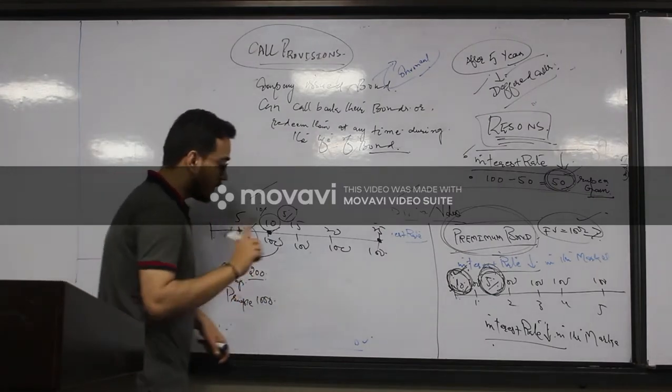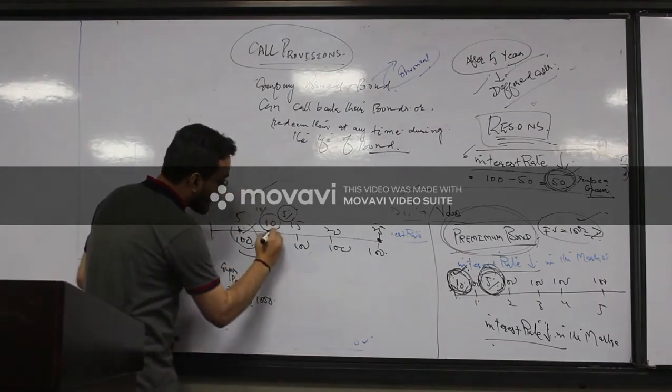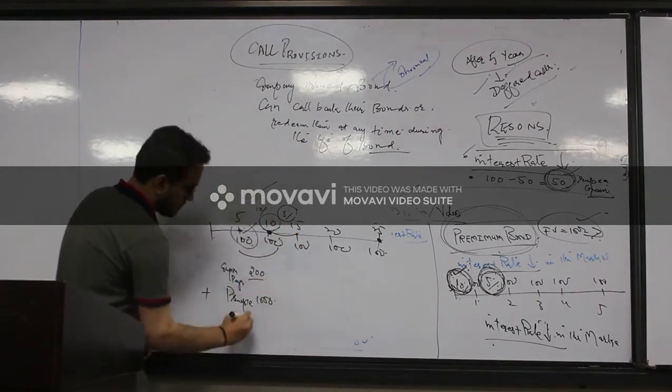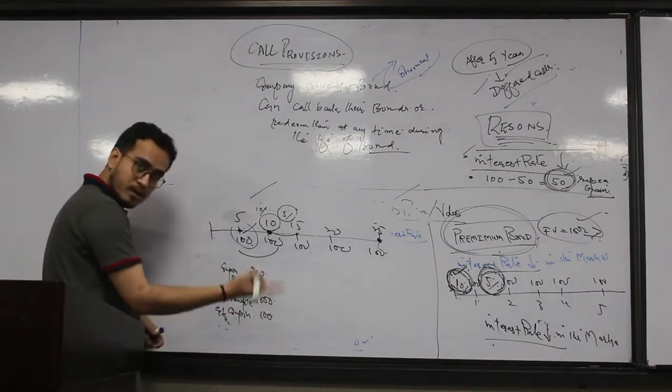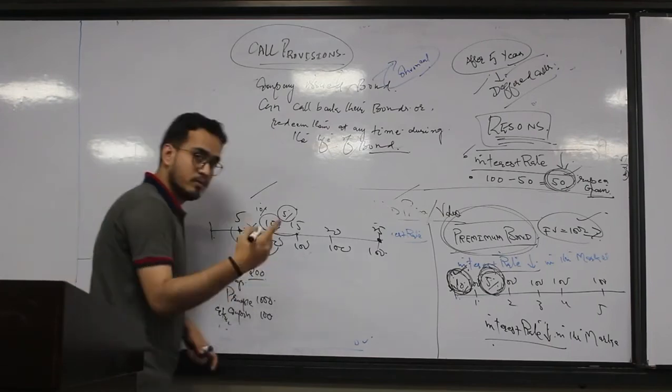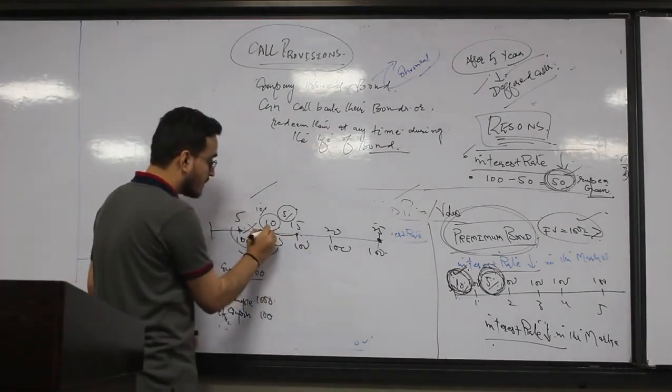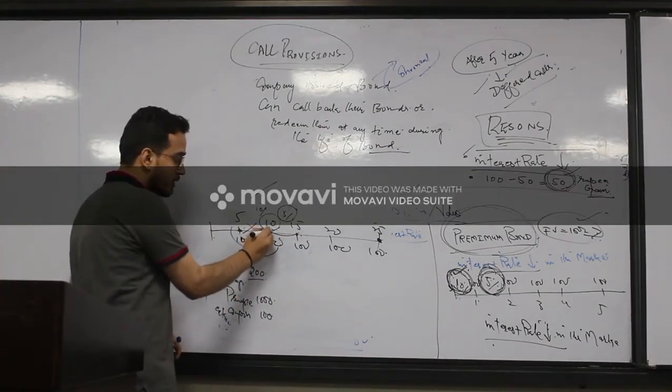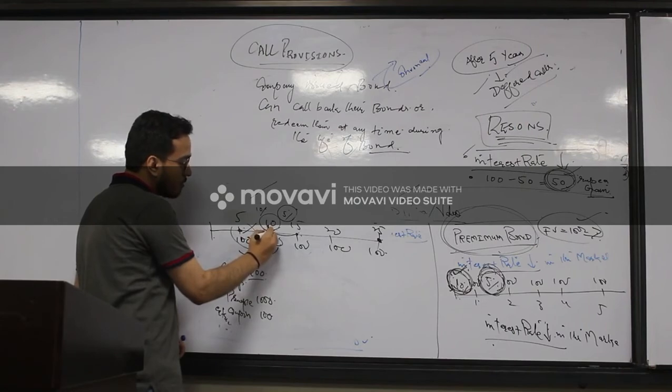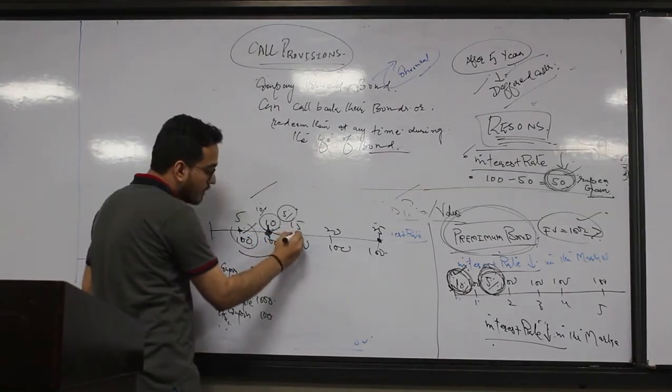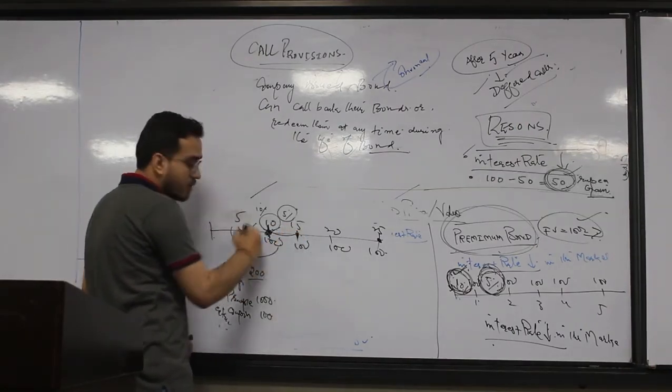But one additional benefit is company giving you one extra coupon. You are getting one extra coupon of one hundred for which you have not held the bond. You have just returned that bond to your company at this point. But company to continue with their good will, they are offering you an additional one hundred.